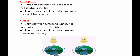So the time between sunrise and sunset is the day. When your part of the Earth turns towards the Sun, it becomes day. When you are standing on the part of Earth that is facing the Sun, you will be in the daytime because you can see the sunlight.